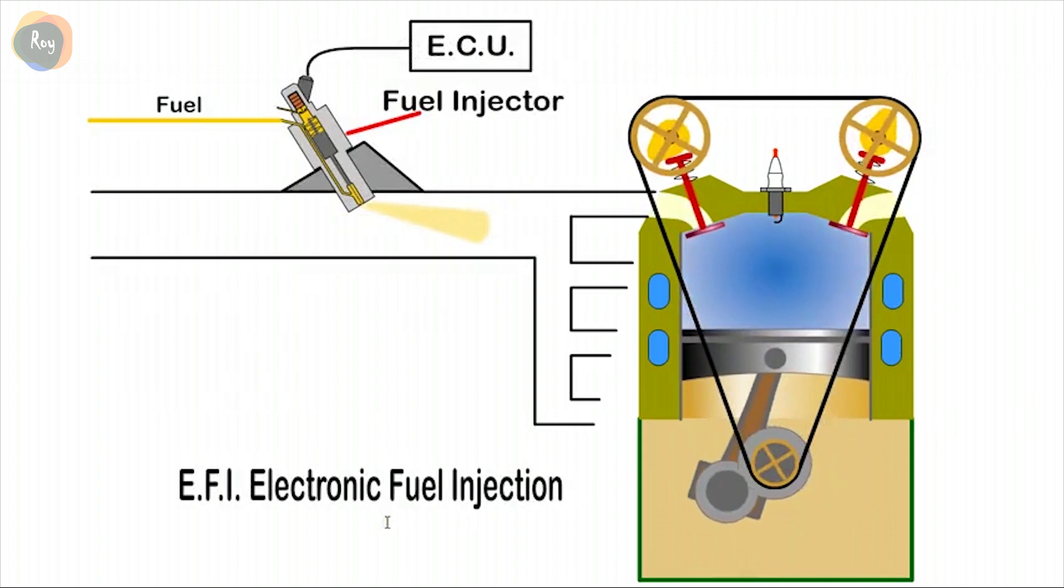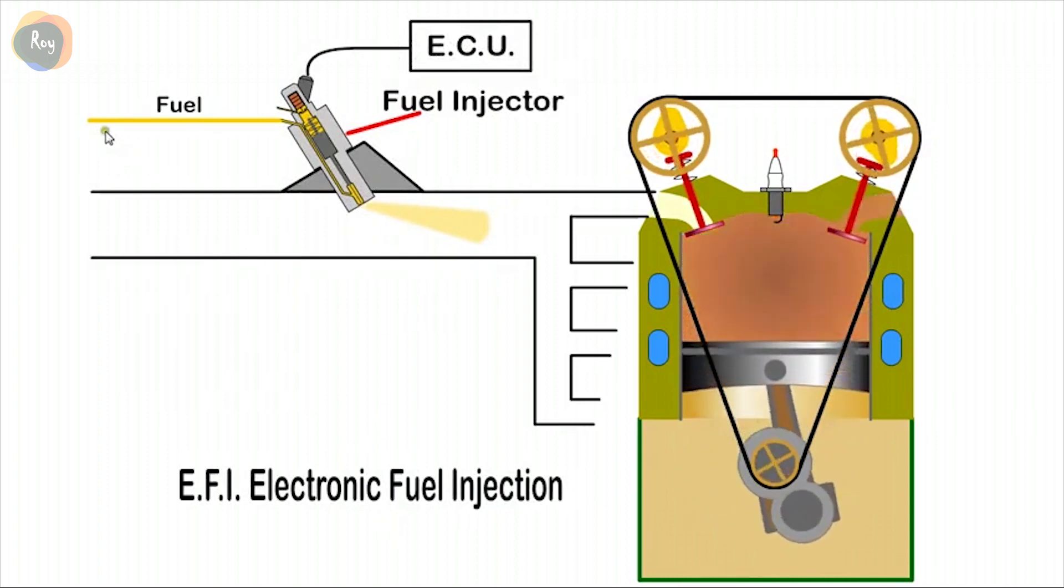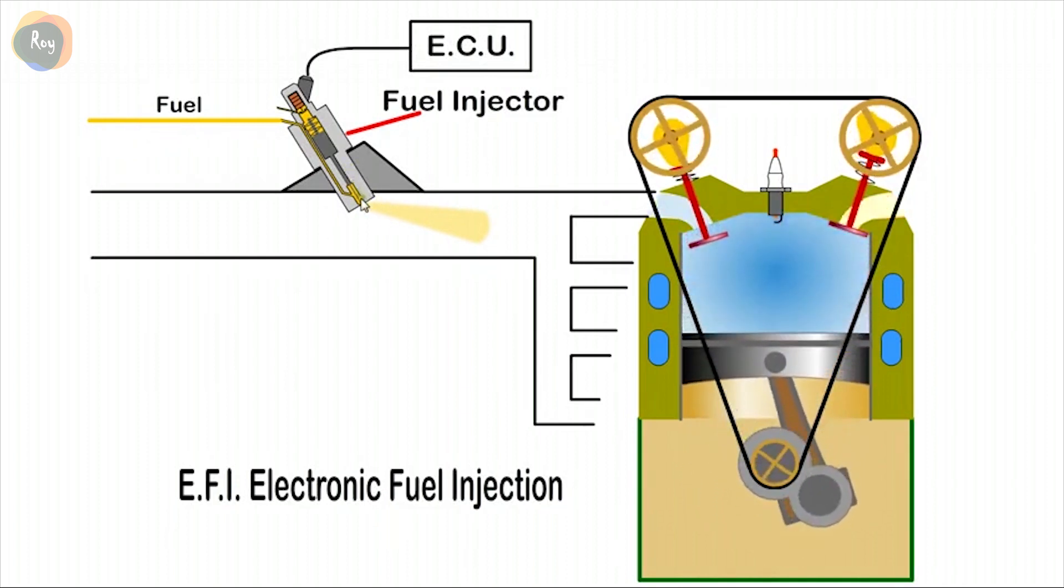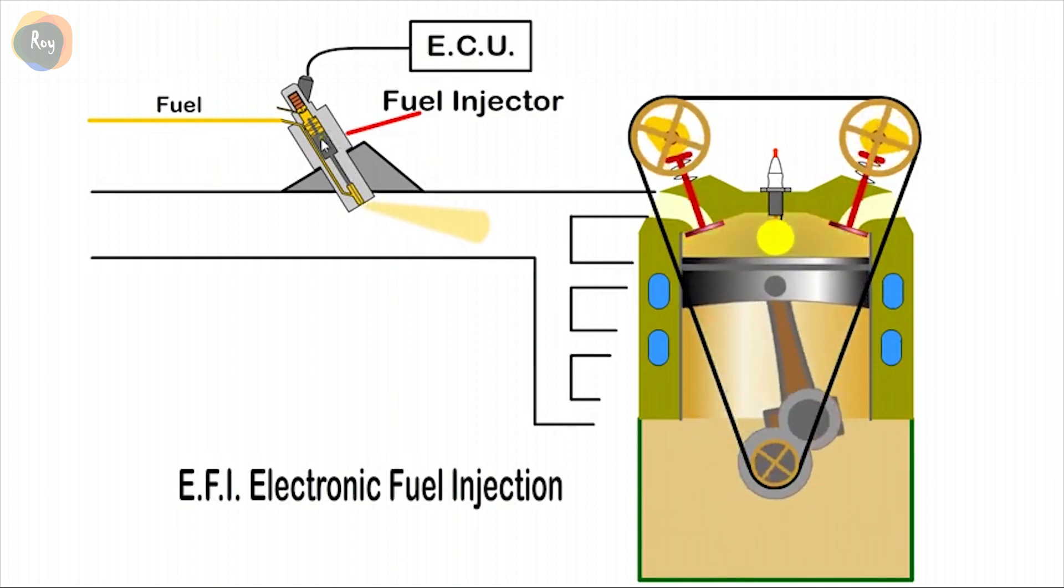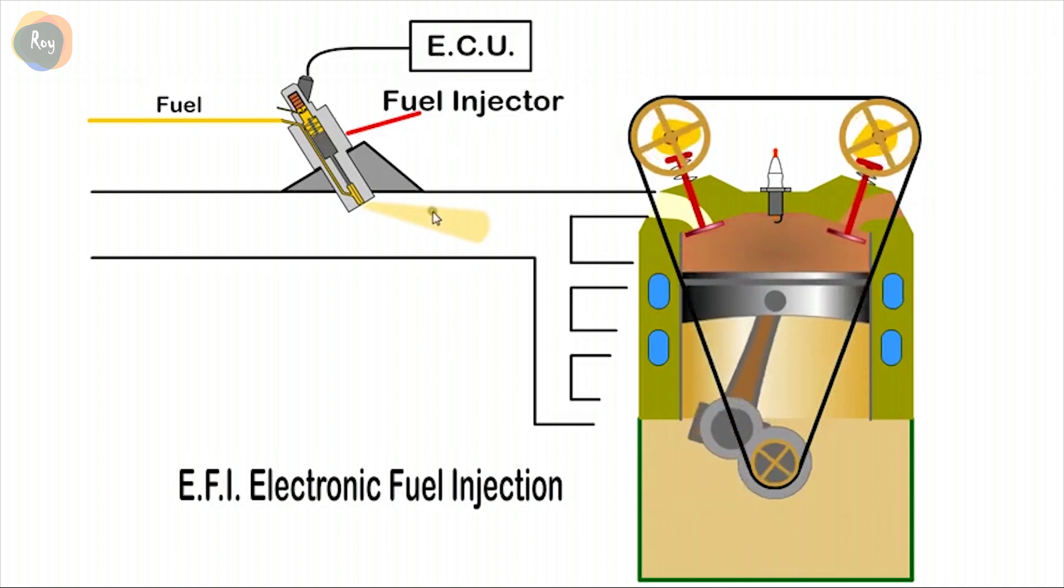With electronic fuel injection, EFI, a pump is used to pressurize the fuel which is atomized by the injector as it enters the inlet manifold. An electrical solenoid is energized by the ECU, which determines the quantity of fuel required.